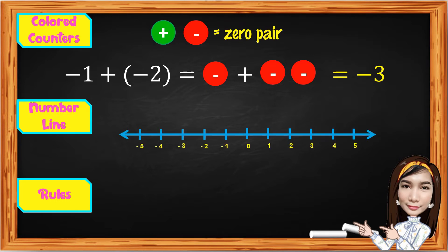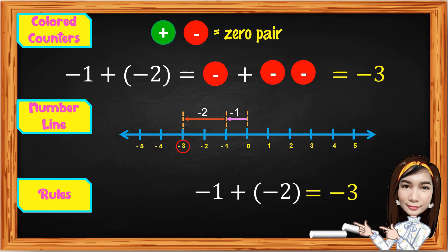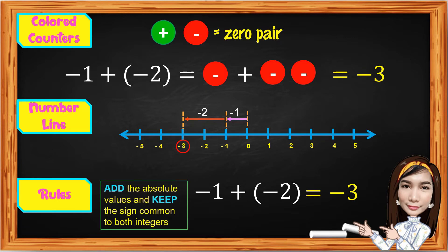Using the number line, always start at 0. Move 1 unit to the left for negative 1. From that point, move another 2 units to the left for negative 2. It ends at negative 3. Thus, negative 1 plus negative 2 equals negative 3. The rule is the same: add the absolute values — positive 1 and positive 2 gives positive 3 — then keep the sign common to both integers, which is negative. Negative plus negative equals negative.